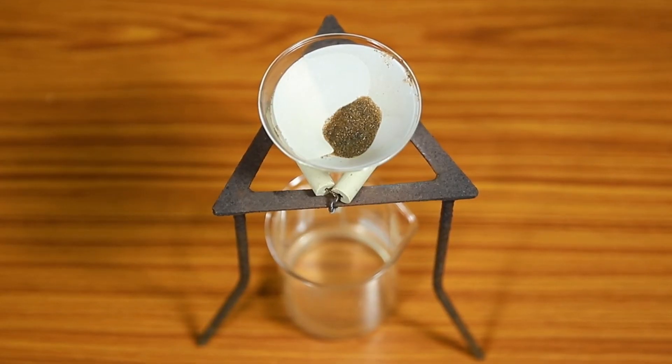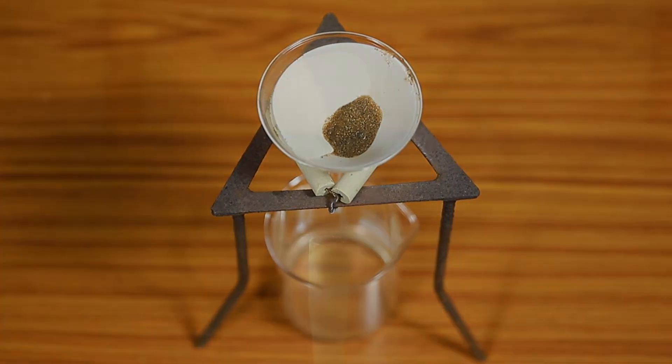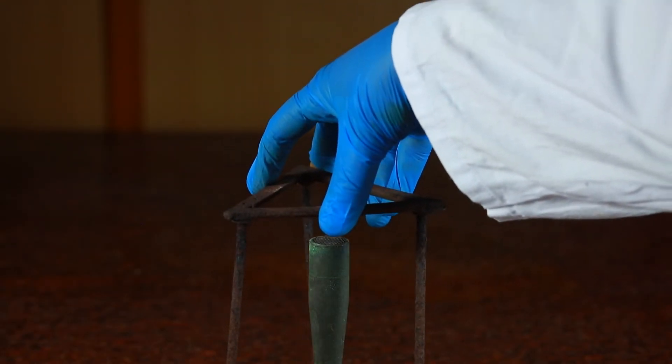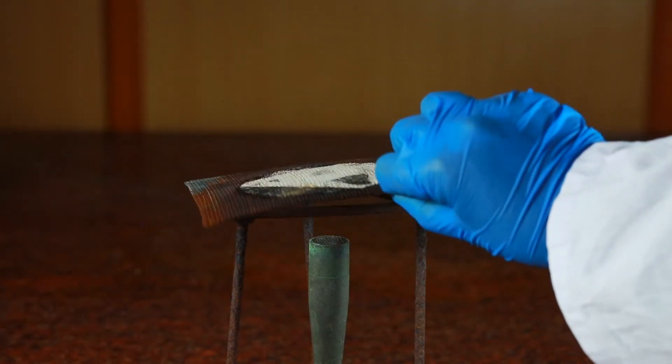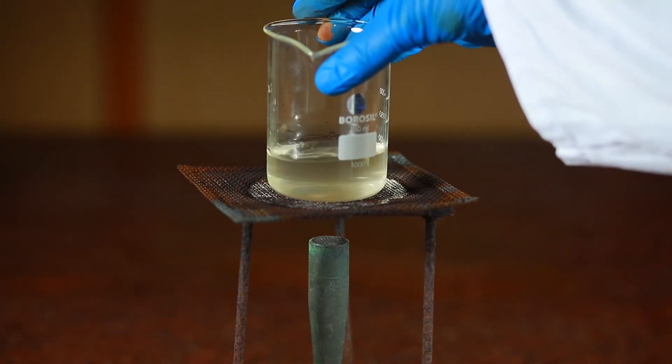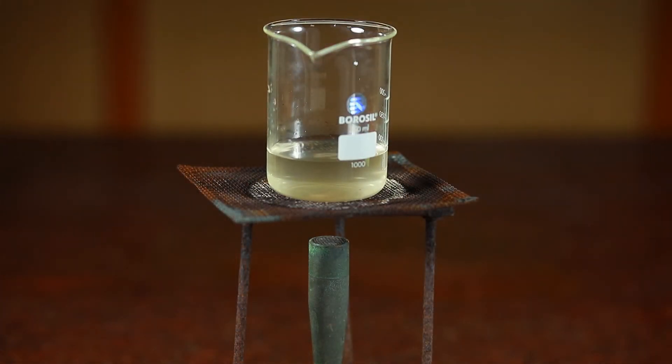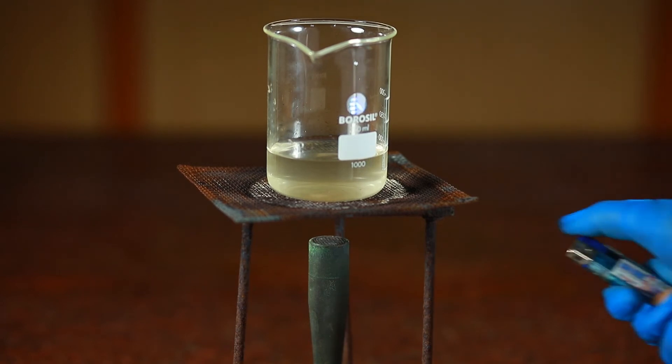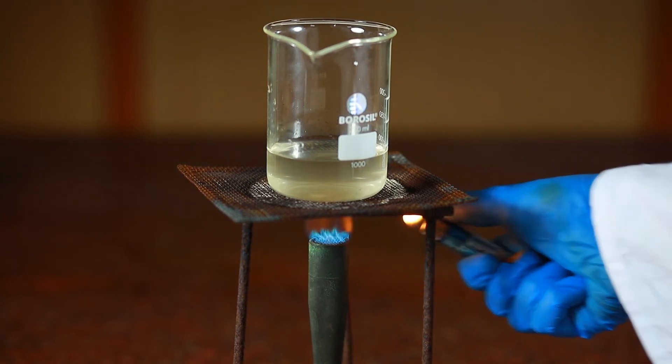Place a tripod stand on top of the burner and then place a wire gauze. Place the filtrate containing beaker on the tripod. Turn on the burner and ignite the burner using a matchbox.